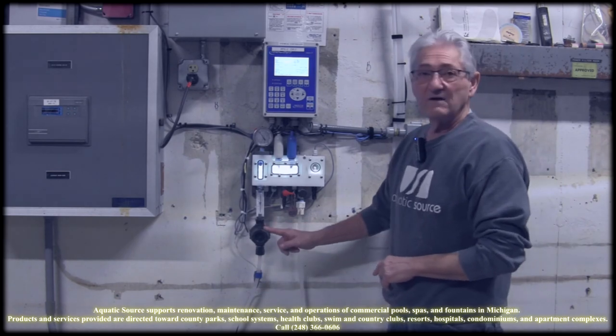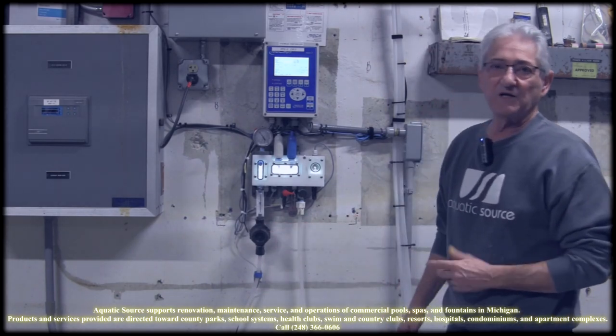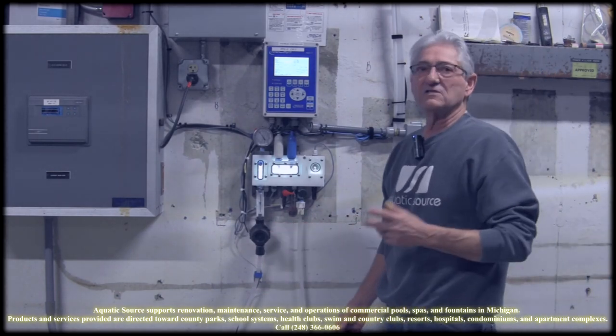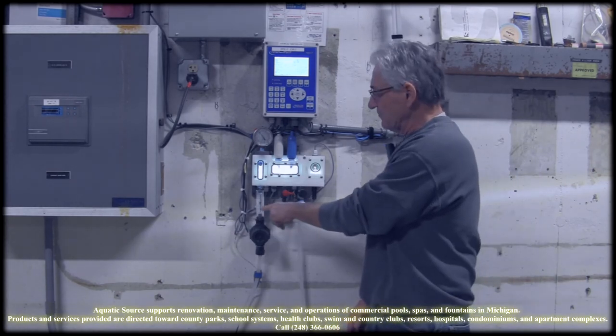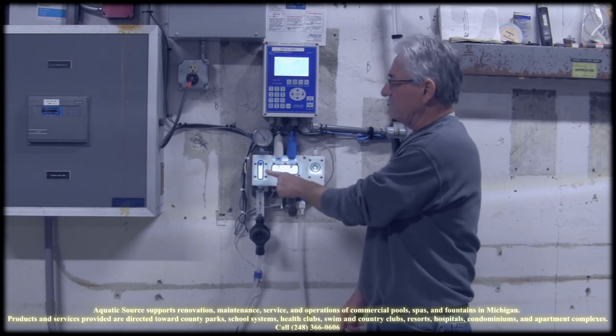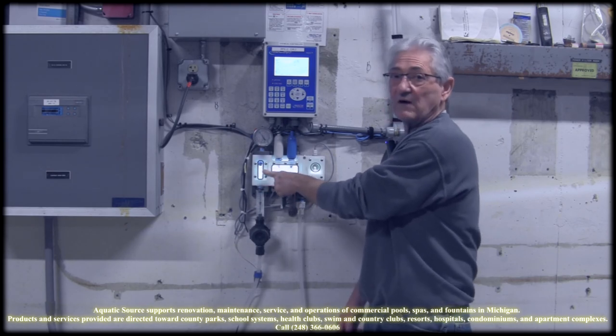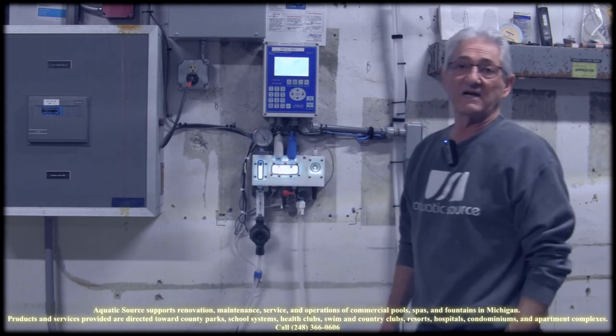We also have the Y strainer that periodically you're going to have to check because anything that gets through your filter system is going to stop this, drop the flow. And when it drops, this lighted flow cell has the flow here that will actually turn this red telling you there's not enough flow.